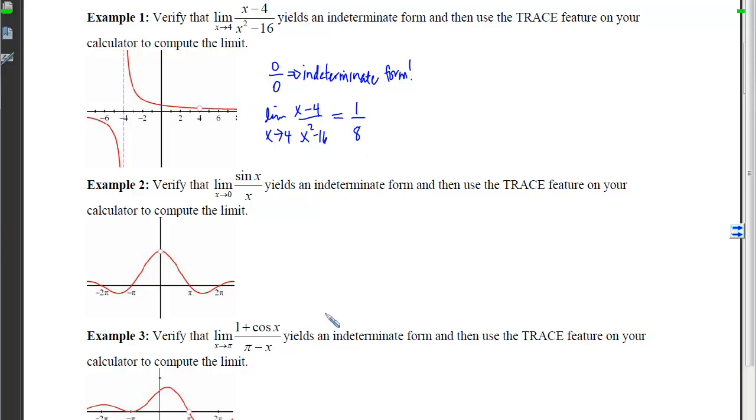If I look at example 2 now, I want to verify that this yields an indeterminate form. So I plug in 0, I get sine of 0, which is 0, and 0 on the bottom. There's that indeterminate form. Then I want to use the trace feature to compute the limit.